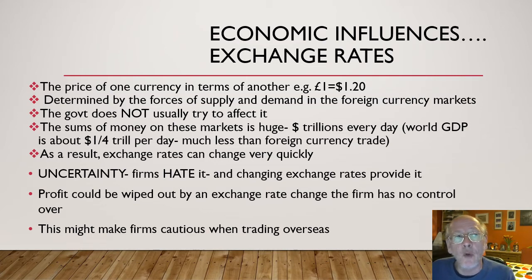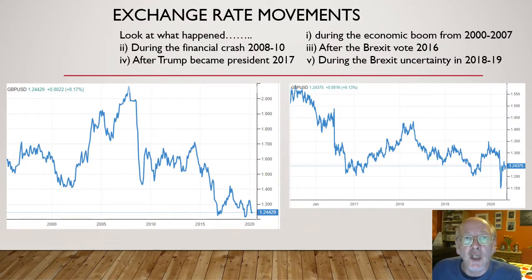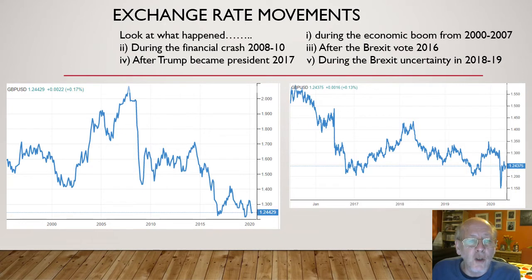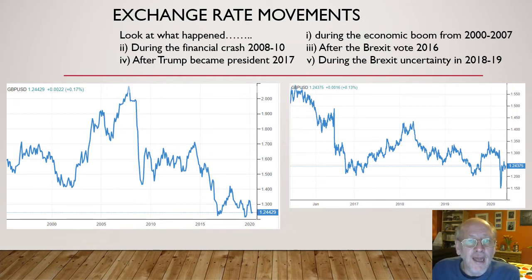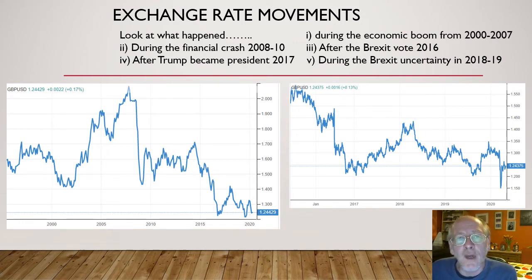Looking at the left-hand diagram, from around 2001 when the value of the pound was about $1.41, you can see that between 2001 and around 2006 the pound appreciated massively to nearly $2.10. That was largely because of the boom in financial markets, Britain being a major financial centre. Then there was a very big and rapid decrease — that was because of the financial crash, the credit crunch.